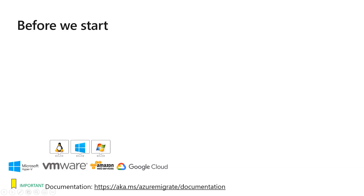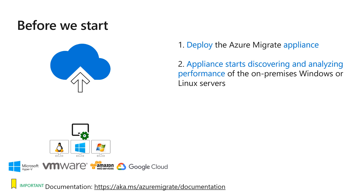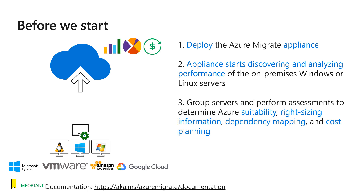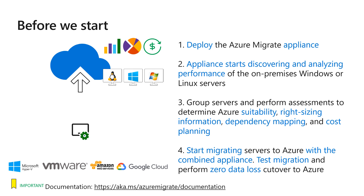Before we start, let's talk through the process. We will start off by deploying the Azure Migrate appliance in the on-premises data center. Once the appliance is up and running, it will perform discovery and analysis of performance data for Windows and Linux machines running in the data center. That information will help us create assessments before we migrate our virtual machines to Azure with the server migration capability.